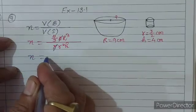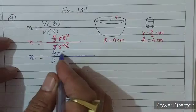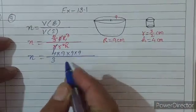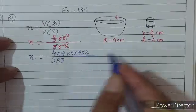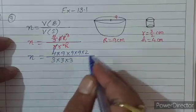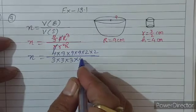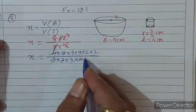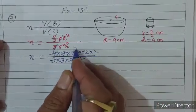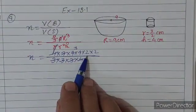n = (4/3 × 9 × 9 × 9) / ((3/2)² × 4)। यहाँ पर capital R = 9, small r = 3/2, height = 4। 3 से 9 cancel होगा, 4 से 4 cancel होगा। 3 × 3 = 9, 3 × 9 = 27, 27 × 2 = 54।